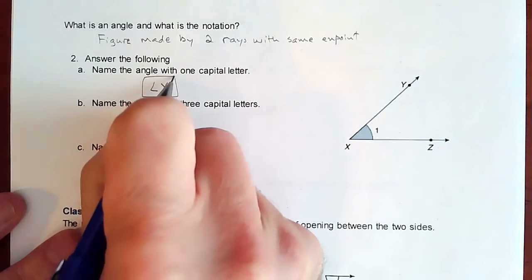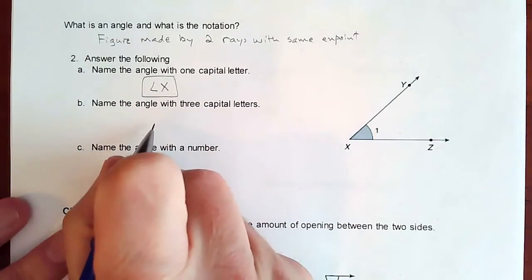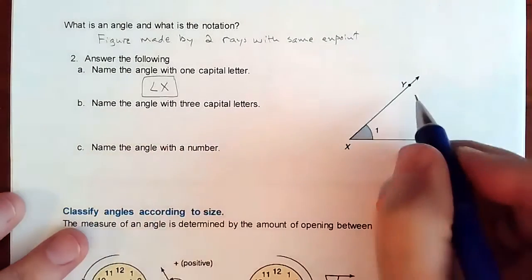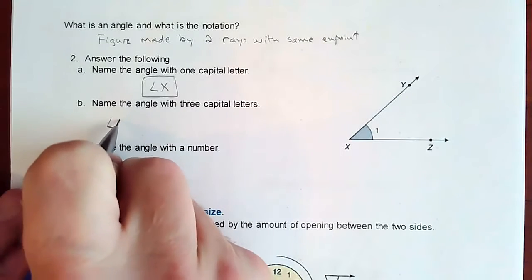This is not always a possibility. Sometimes lines are crossing and angle x is not specific enough. So you may have to name something with three letters. So angle y, x, z is a way to do it.